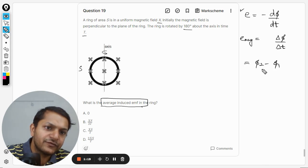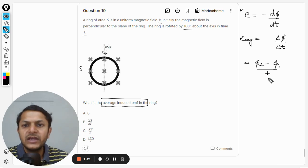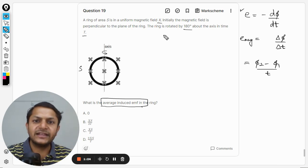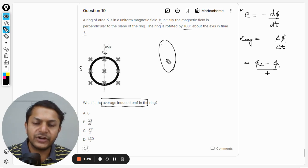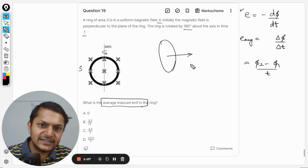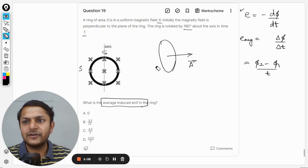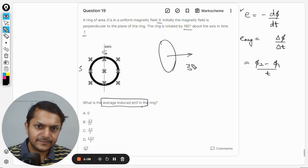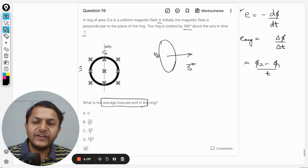This will be φ₂ minus φ₁ divided by total time T. Now in the case number one, it is placed like this. Let us say this is the ring. I am creating my own diagram now, and this is the area vector which is S.